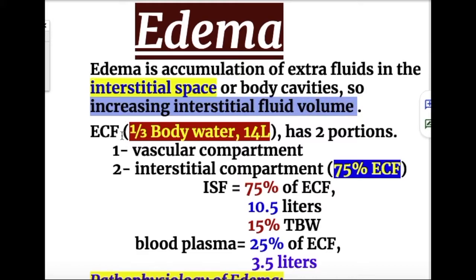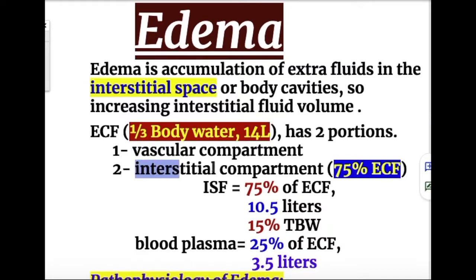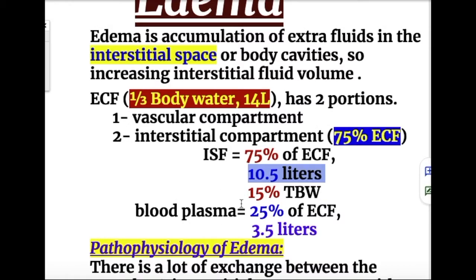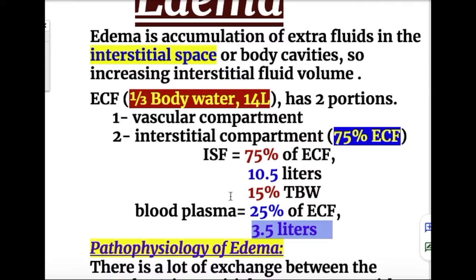The extracellular fluid contains one-third of body water, about 14 liters, while two-thirds is intracellular, about 28 liters. The extracellular fluid has two portions: the vascular compartment and the interstitial compartment. The interstitial compartment comprises 75% of extracellular fluid (about 10.5 liters) and blood plasma contains 25% (about 3.5 liters).